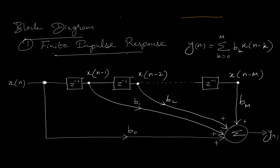Now let us understand the structural differences between these two filters. These diagrams are generally known as the block diagrams for FIR and IIR filters. The output of FIR is the weighted sum of inputs — past inputs and present inputs — and this equation must be fulfilled in the block diagram.